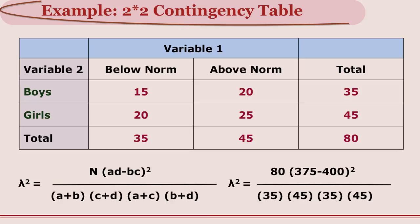Let us take one example. There are two groups — boys and girls — differing in gender. We are expecting them to excel in a certain test relative to a norm, so there are two categories: those above the norm and those below the norm. We have the number of boys and girls in each cell. A plus B equals 35, C plus D equals 45, A plus C equals 35, and B plus D equals 45. The total N is 80 — 35 boys and 45 girls.